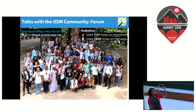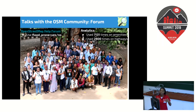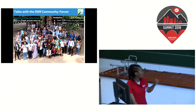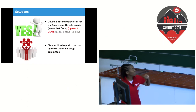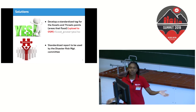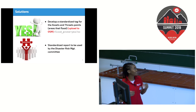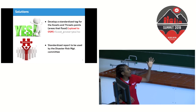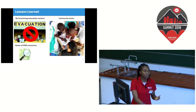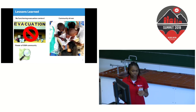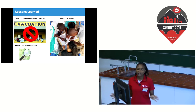We decided to reach out to the OpenStreetMap community through the community forum and the tagging mailing list to ask which tag would be best to use. We decided to use the flood_prone=yes/no tag, which is used more than 7,000 times in amenities and more than 2,000 times in highways. On top of that, we developed a standardized report to be used by responders such as the Red Cross community to respond to flooding.